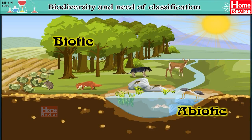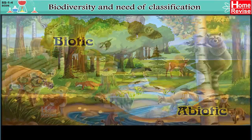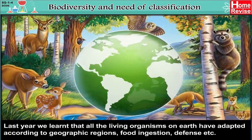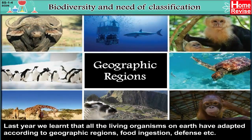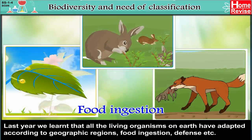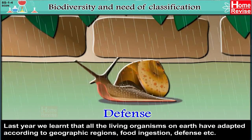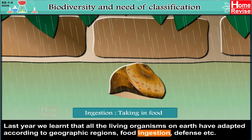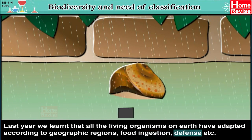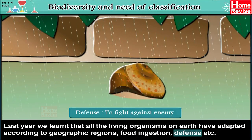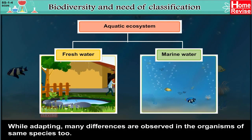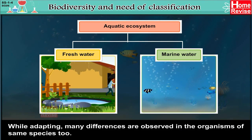Biodiversity and Need of Classification. Last year we learnt that all the living organisms on earth have adapted according to geographic regions, food ingestion, defense, etc. Ingestion means taking in food. Defense means to fight against enemy. While adapting, many differences are observed in the organisms of the same species too.